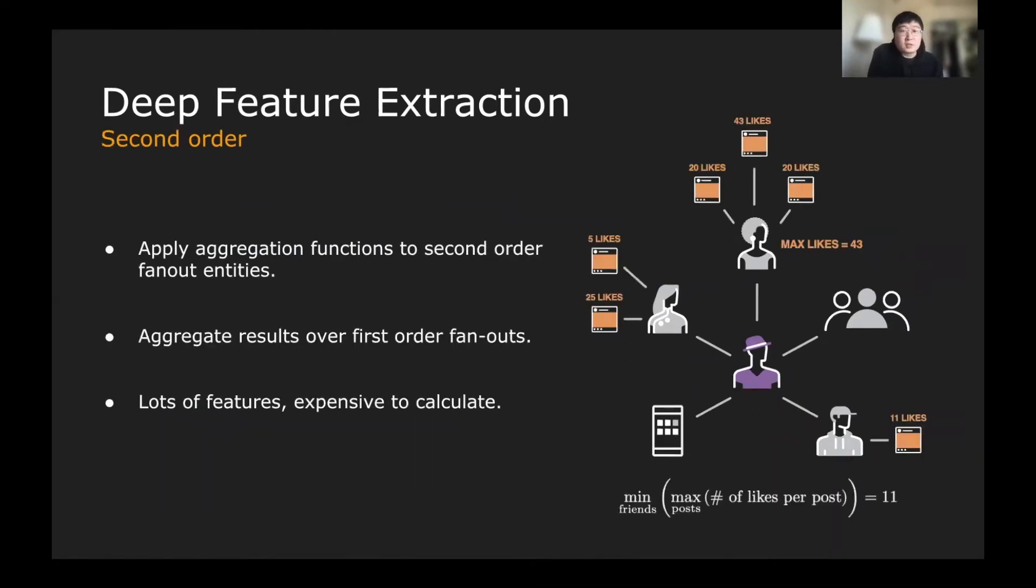In the actual DEC system, we actually take a look at more than the first order of fanout. We would apply the second order of the fanout, and then apply the aggregation function to those second order of fanout entity features. As an example, for each of the target accounts, we first find out to their friends, and then we find out to all the posts generated by the friend and how many likes are generated from those posts. We take a look at all those features and aggregate them back using the standard aggregation functions.